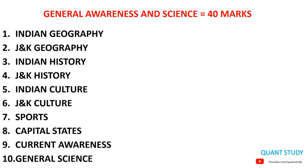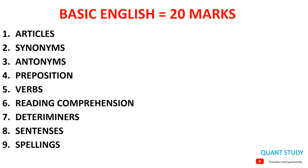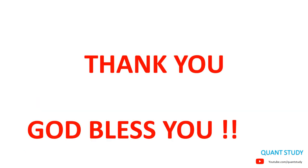Finally, the English section has nine topics: Articles, Synonyms, Antonyms, Prepositions, Verbs, Reading Comprehension, Determiners, Sentences, and Spelling. They are not very complex, but we will cover all of them. Most probably we will start in the upcoming week, so don't worry. Just make sure you don't miss any video. Watch the videos as they come so nothing stays pending. That's all for this video — thank you and God bless you all.